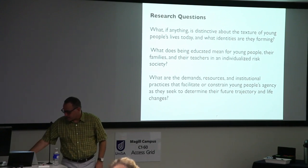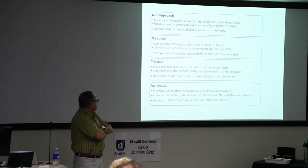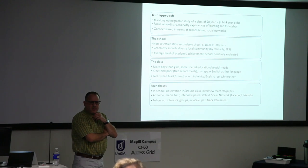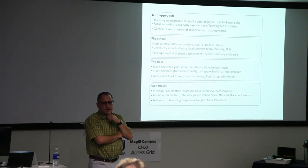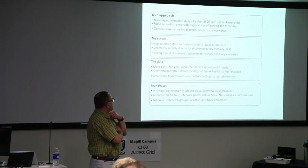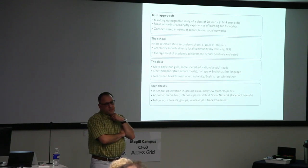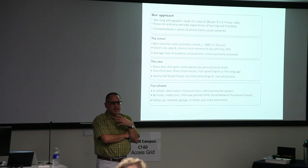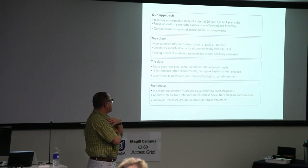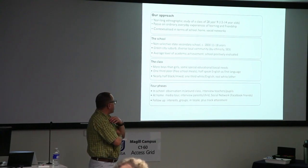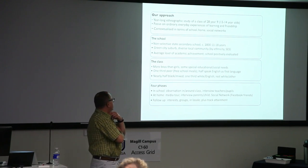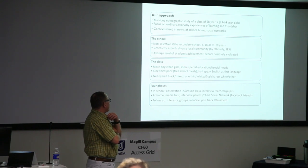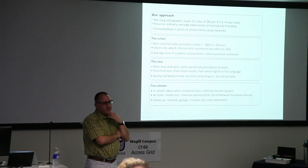We did a year-long ethnographic study of a class of 28 kids — Year 9 in England, about 13 to 14 years old. We wanted to focus on ordinary, everyday experiences of learning and friendship, looking at relationships and the affective social dimension of being in school, with friends, and in the family — across home, school, and social networks. We tried to find an ordinary school — a non-selective state secondary school relatively proximate to where we lived, which of course is like one of those chimeras.